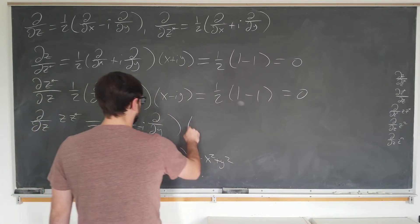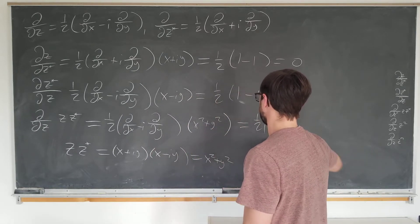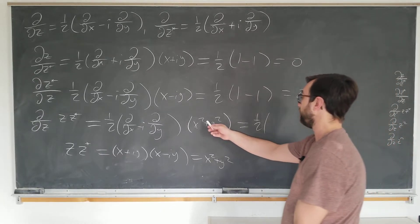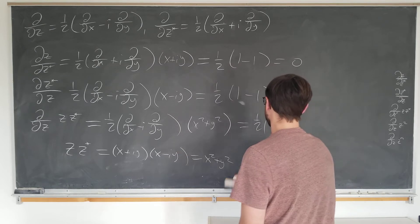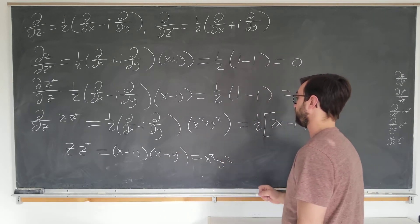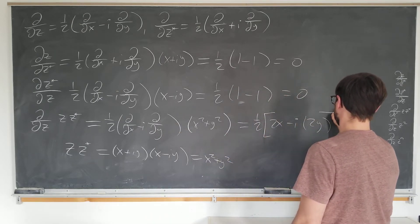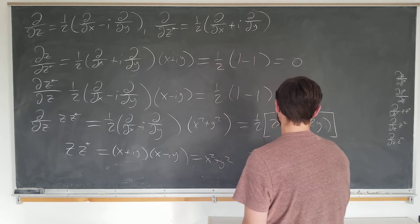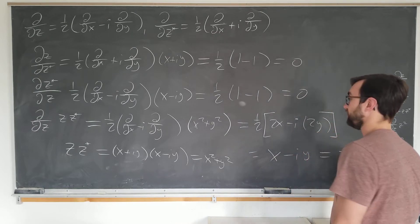And we can write this here. Now when we take the x operator and act it on x squared plus y squared, we get a 2x term, and we get a minus i, and the y operator gets a 2y. The twos cancel. This is simply x minus i y, which you should recognize as z star.